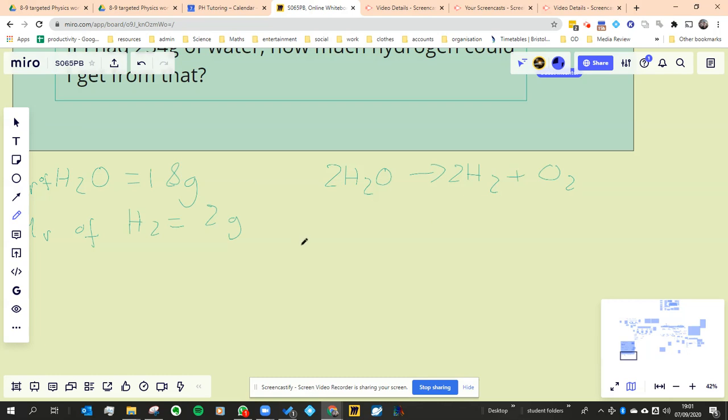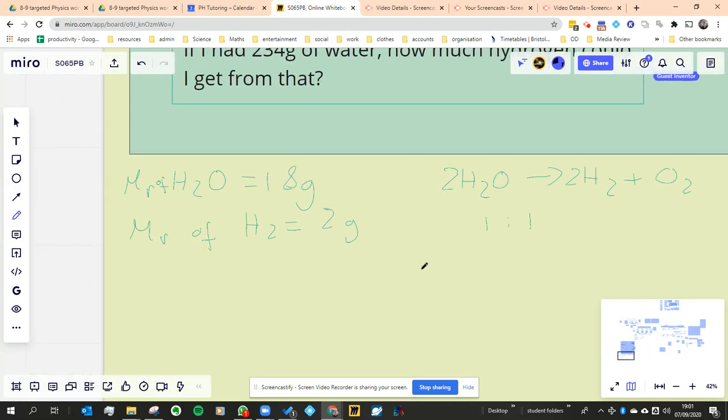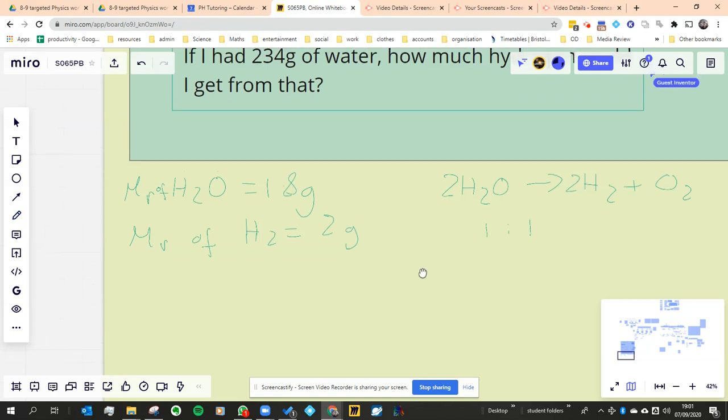Now we're only interested in the water and the hydrogen. And that's one to one. So the water and the hydrogen is one to one. That's going to make our life a bit easier. Because whatever amount of moles of one thing we've got, it's going to be the same for the other thing, because it's one to one.